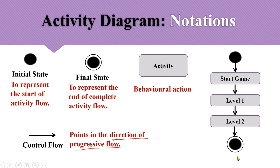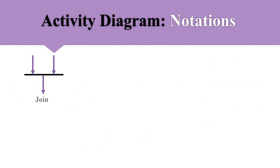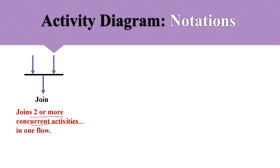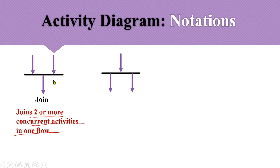This example shows that we cannot move to Level 1 directly; we must pass through the Start Game activity first, and only then move to Level 2. Next, the join node is used to represent two or more concurrent activities merging into one flow. It accepts two or more concurrent (parallel) activities as input but provides only one activity as output.